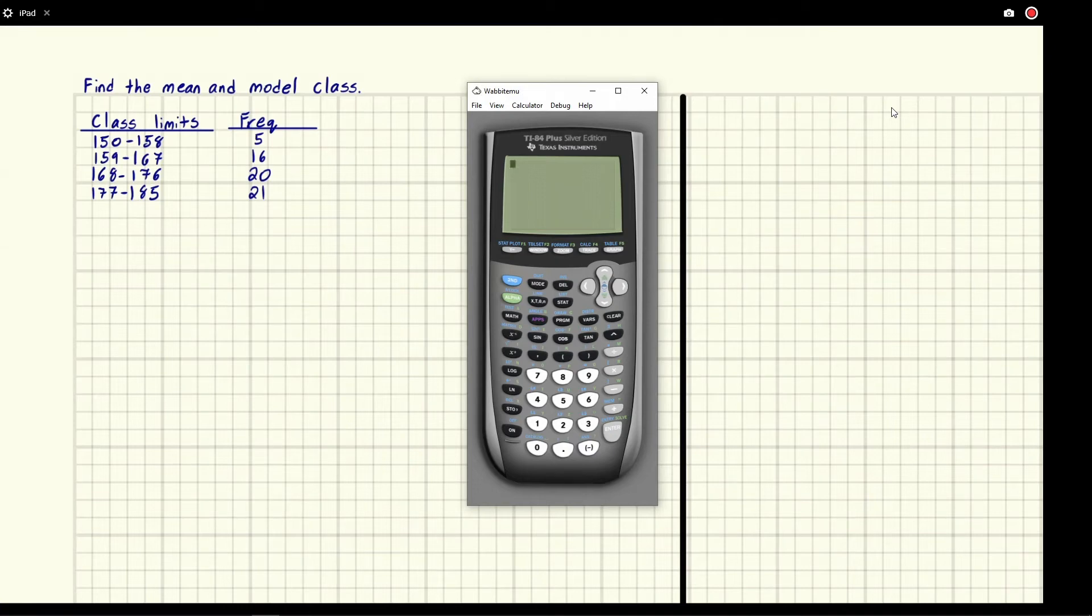Eric Burgess here and we've been asked to find the mean and modal class. Now in this case we don't have specific numbers. Normally we have a list of numbers and we add them all up and divide by the number of numbers, by the sample size, and that gives us a mean. Well in this case we don't have that. We have instead these limits and then we're told how many numbers are in each limit.